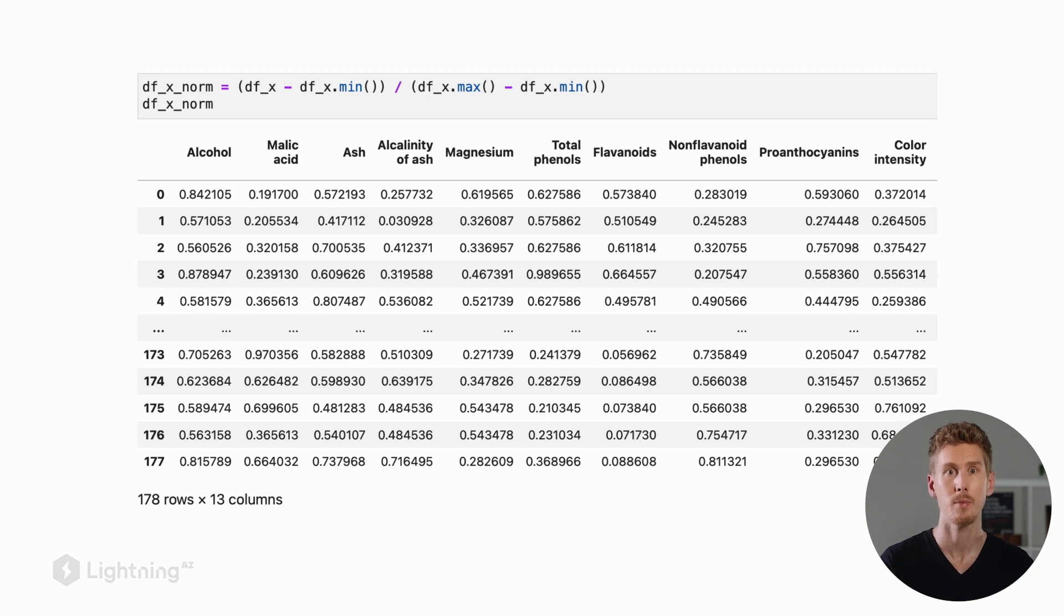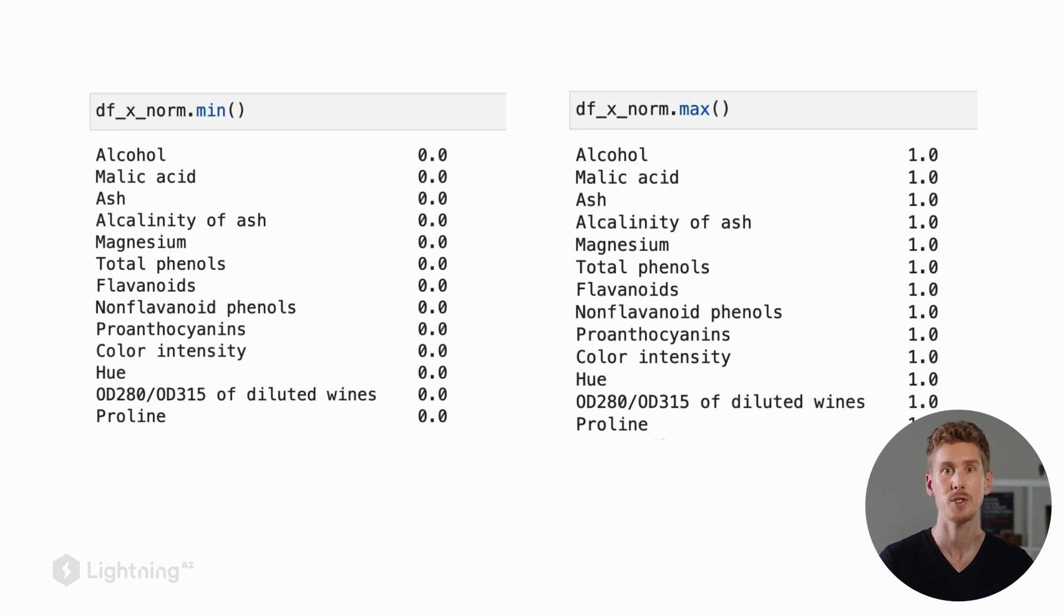Using this code shown here, we normalize each data point in the dataset and each feature column. Now let's double check the new minimum and new maximum values. As we can see, all the feature columns have a minimum at zero now and all the feature columns have a maximum at one.